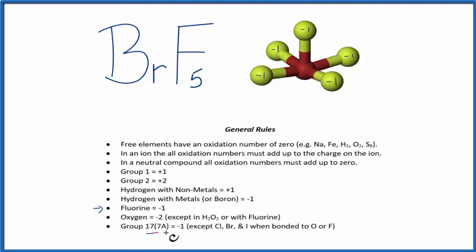For the bromine, it's in group 17A, it's a halogen, and normally it's minus one. Except in the case where it's bonded to some things like oxygen and then fluorine, which we have here. So we can't use this rule to find the oxidation number on the bromine.